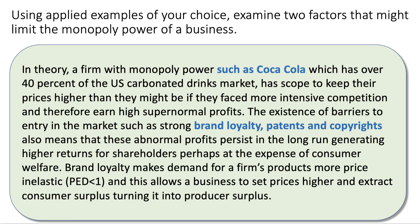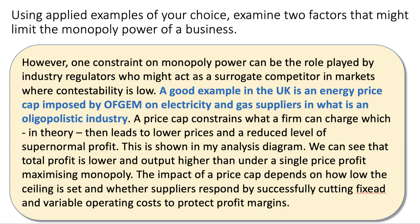One constraint to monopoly power can be the role played by industry regulators, who might act as a surrogate competitor in markets. A good example in the UK is the energy price cap that Ofgem — the Office for General Energy Markets — has introduced on electricity and gas suppliers in what is an oligopoly. A price cap constrains what a firm can charge, which in theory leads to lower prices and a reduced level of supernormal profits.